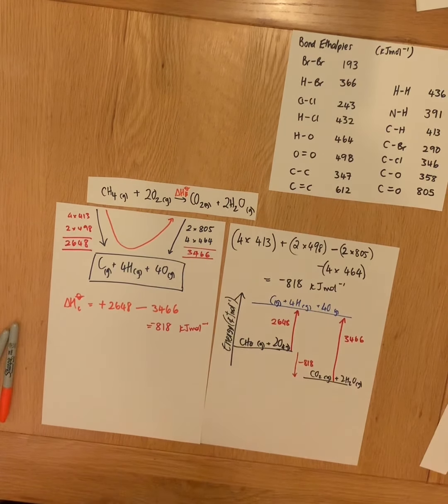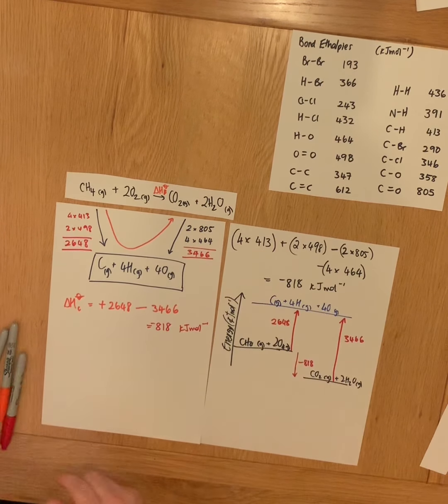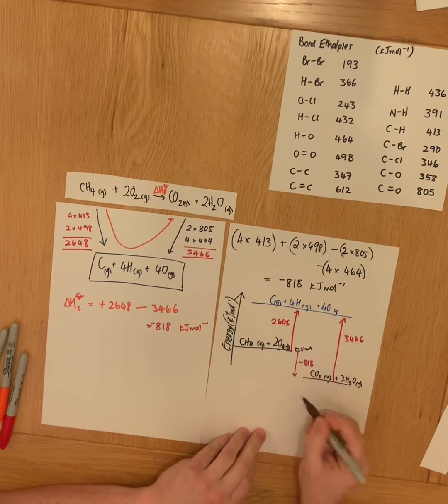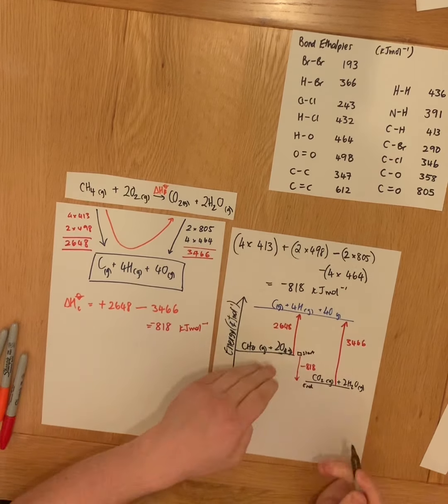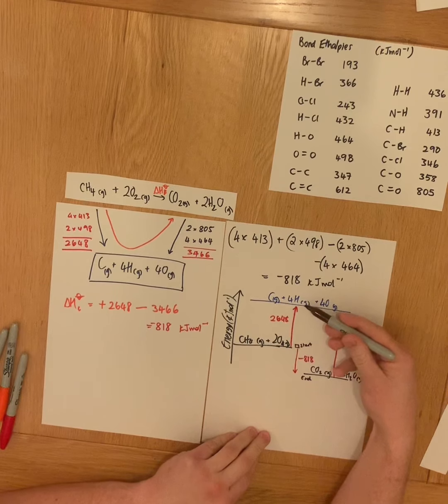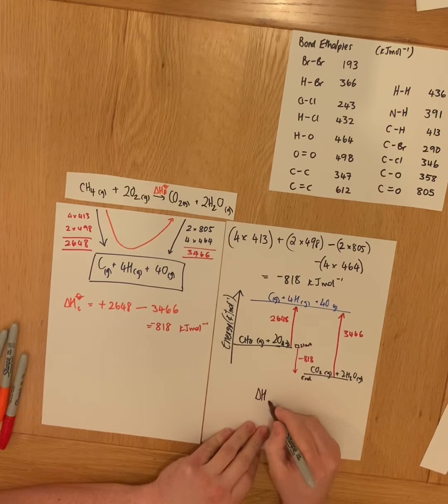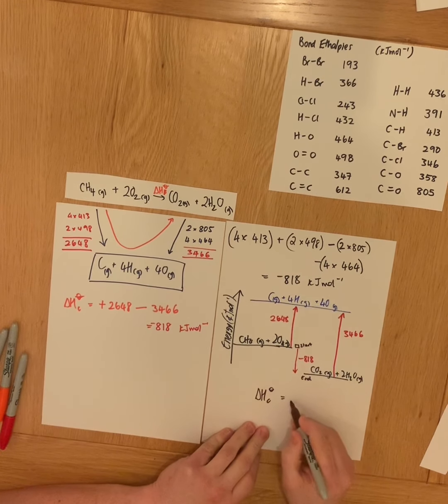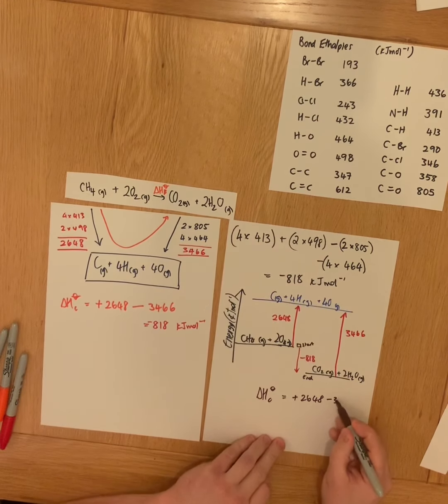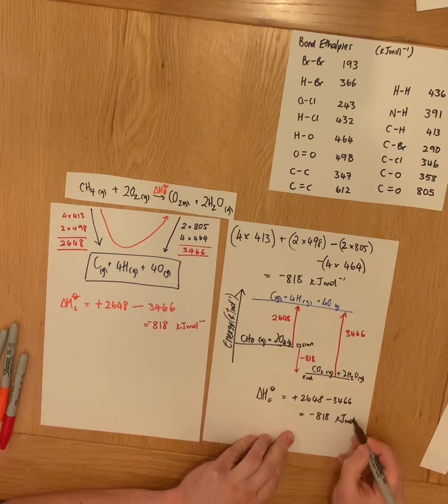the definition being breaking bonds and breaking the bonds in the products, that's 3466 and 2648. And we can see here, whether we have our Hess's cycle or whether we have our energy level diagram to calculate, the enthalpy change starting here and ending here, starting with our reactants, ending with our products. If we go the other route, we go the correct way up that arrow and we go the other way down that arrow. So the enthalpy of reaction or enthalpy of combustion for this reaction is 2648 minus 3466, which equals minus 818 kilojoules per mole.